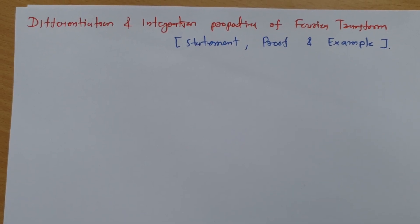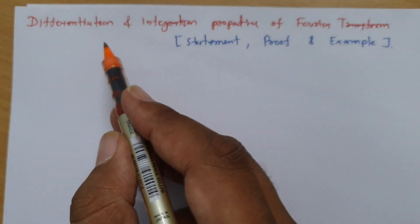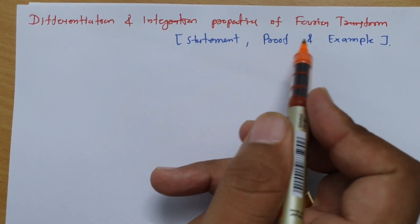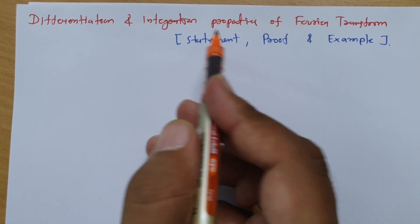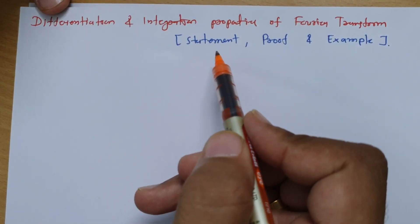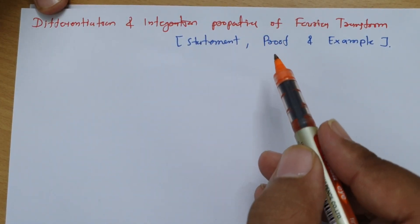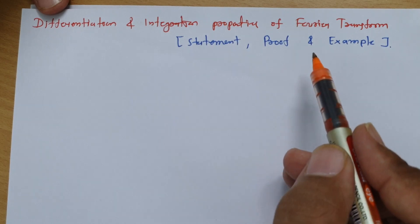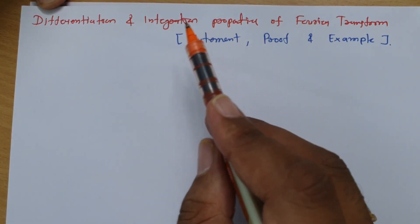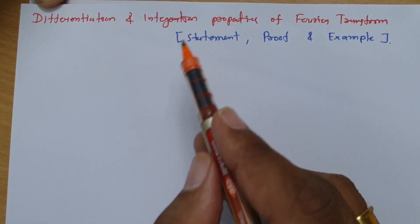Welcome to the signal and system lecture series. In this session, I will explain the differentiation and integration property of Fourier transform. My agenda is: first, I will give you the statement of the differentiation and integration property, then the proof, and then we will solve some examples to show how to apply these properties.